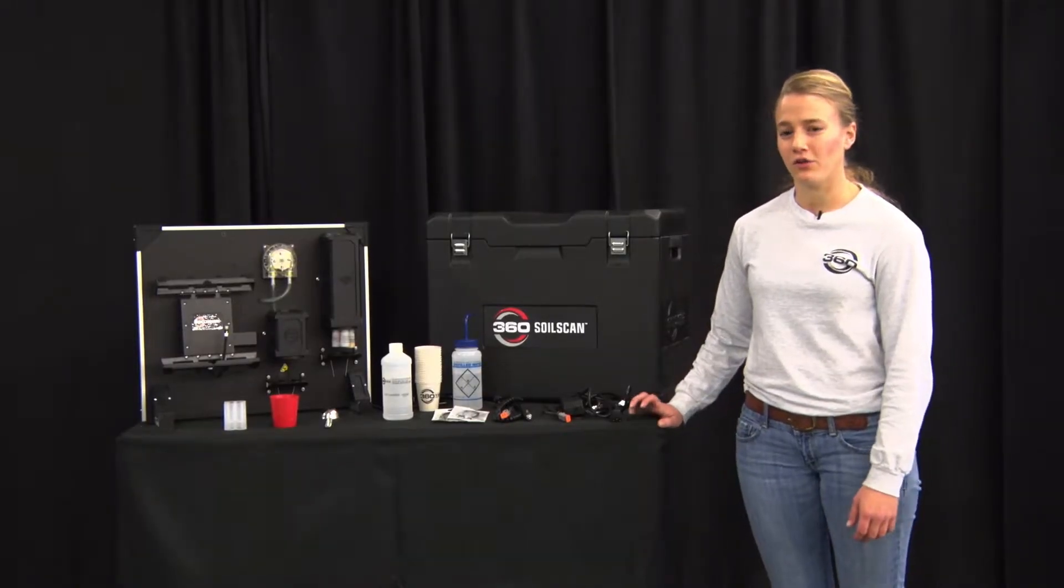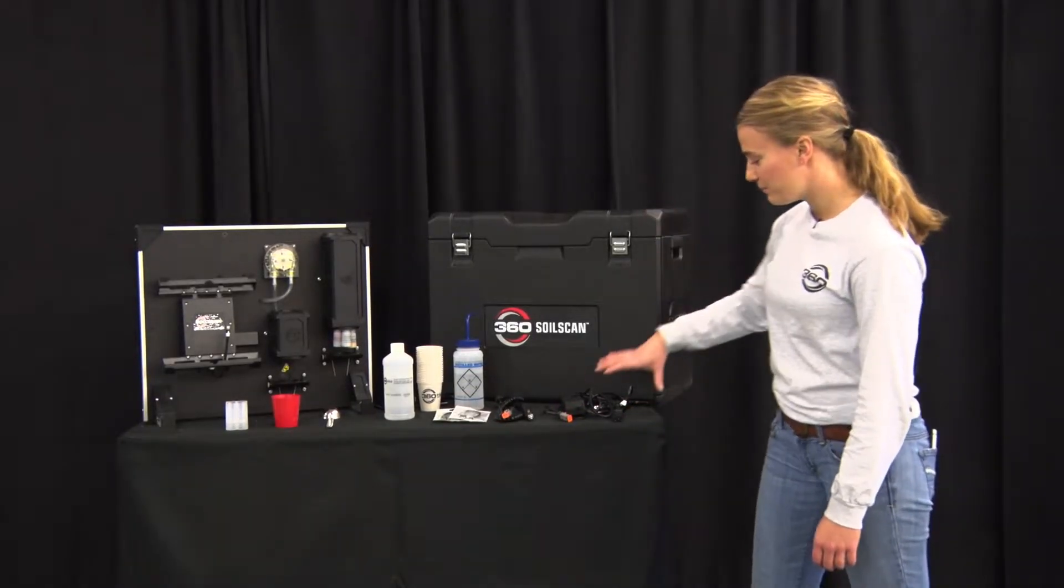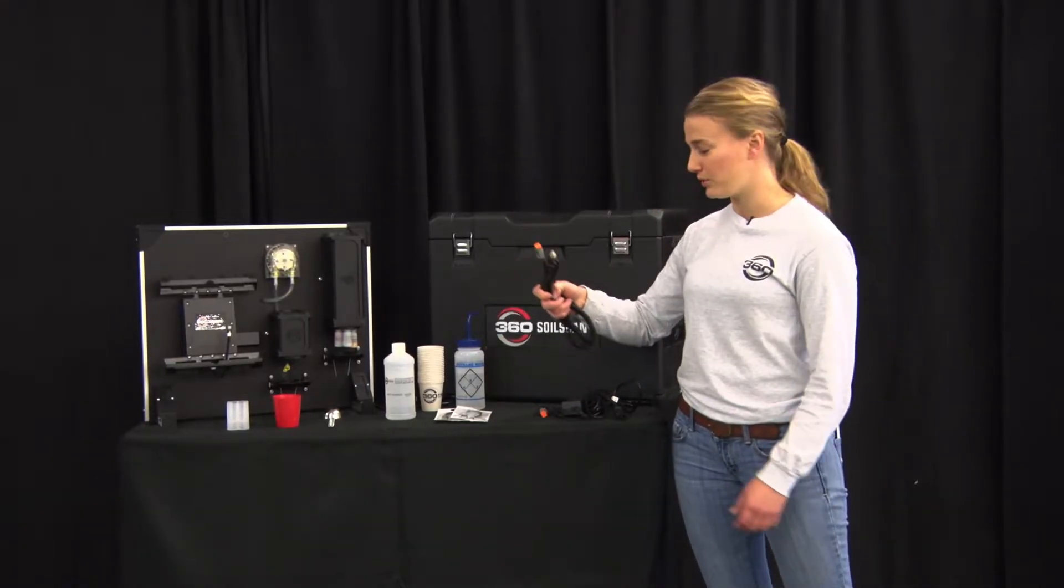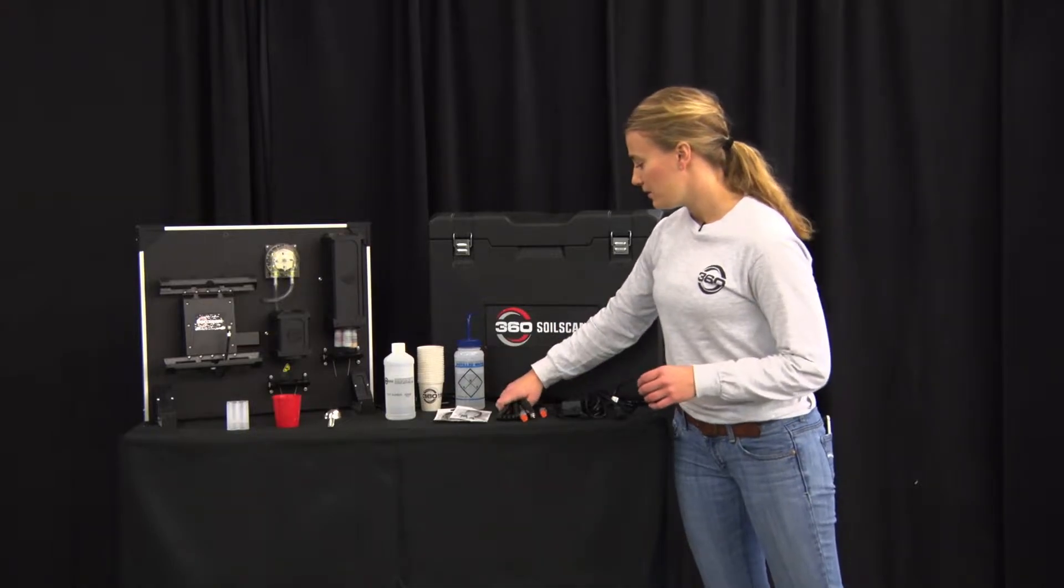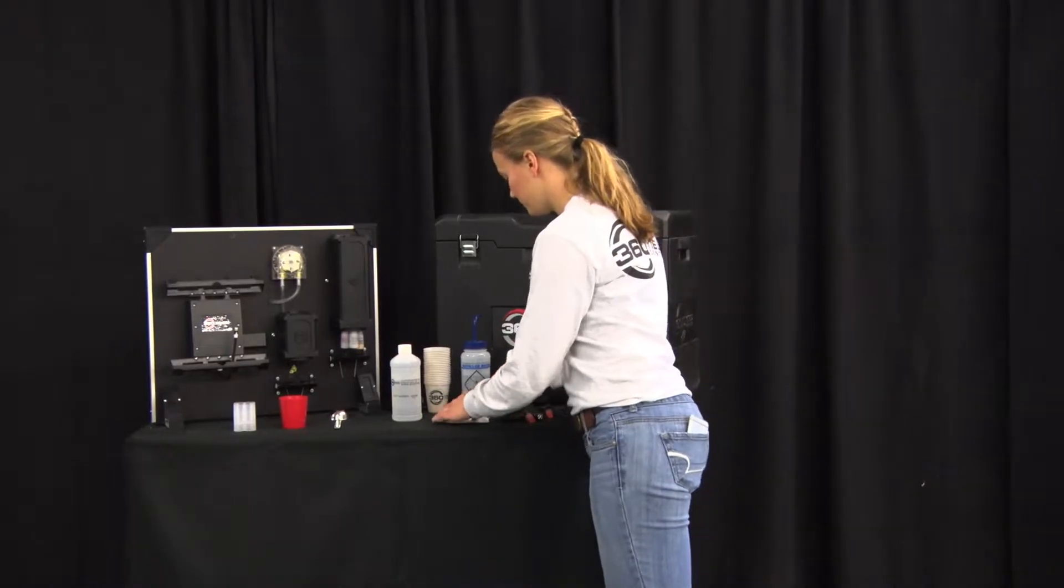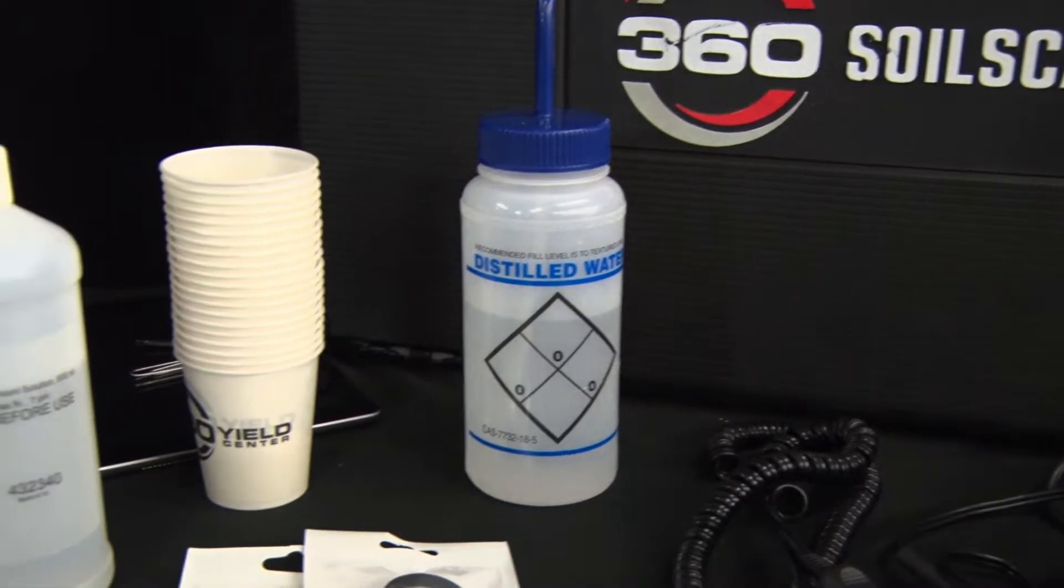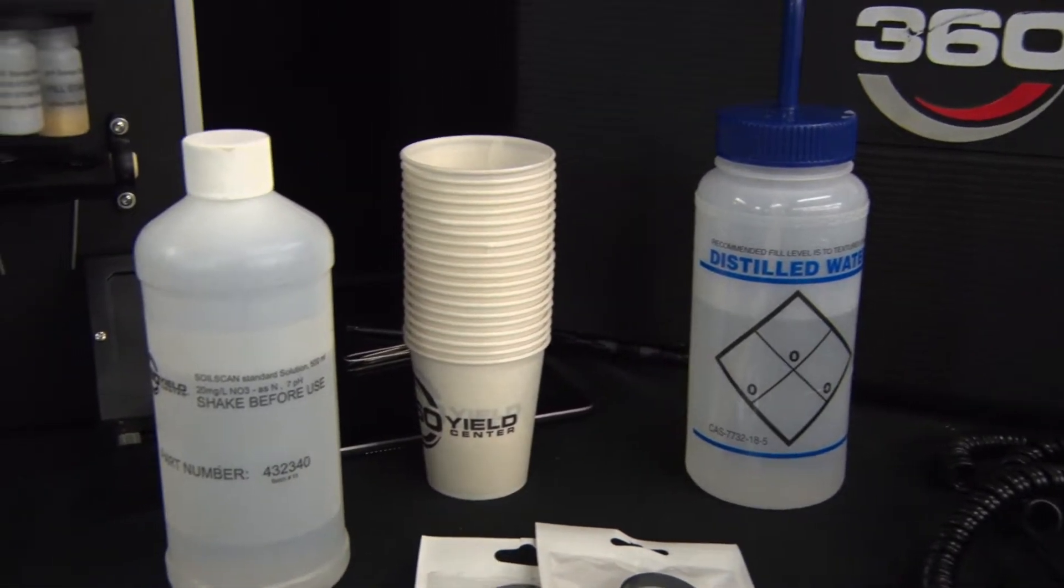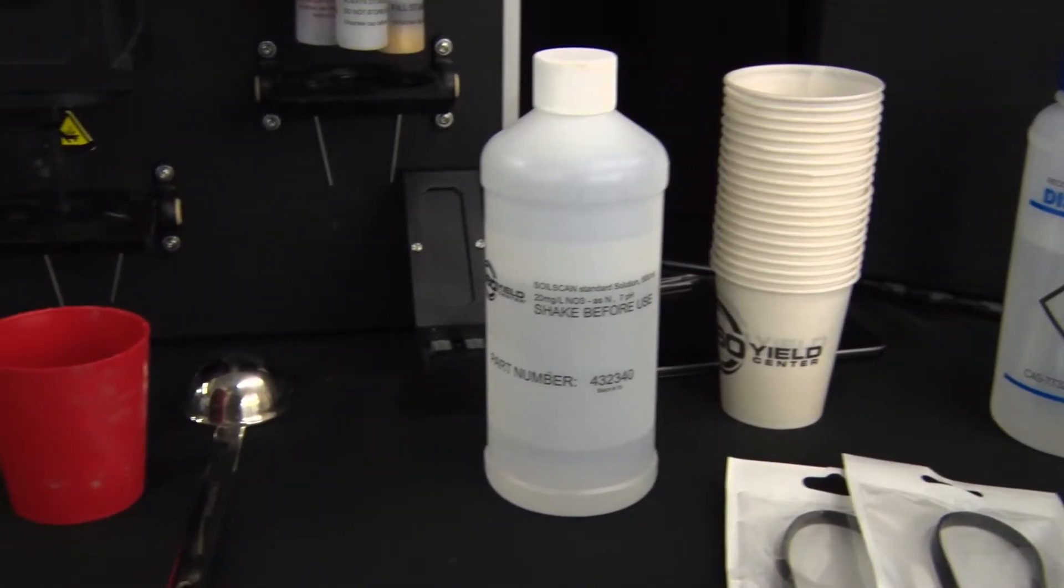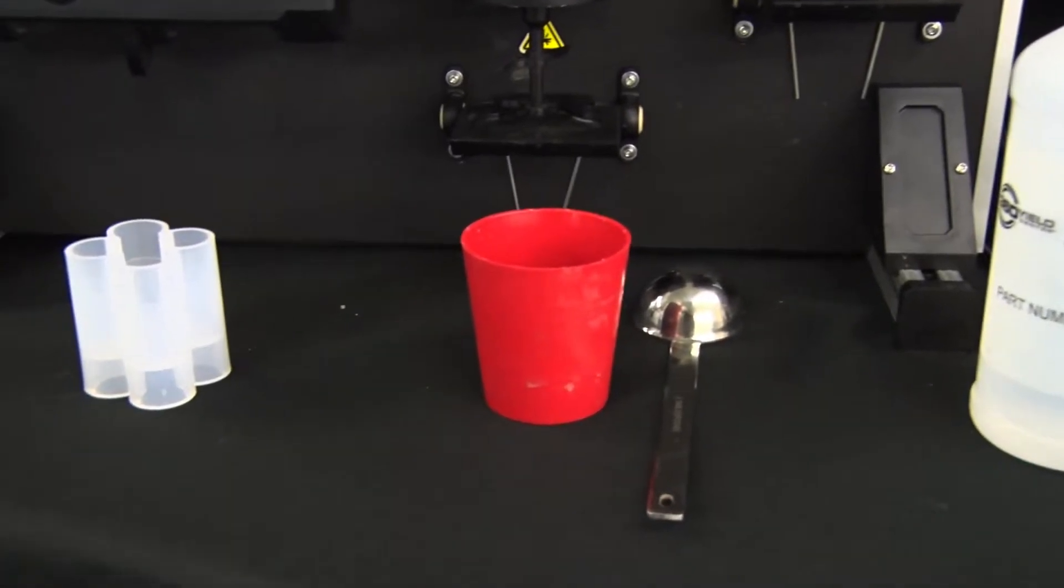On the table here are all of the basic components that will come with your SoilScan. The case, power cables, both 110 volts and 12 volts to be plugged into a cigarette lighter, charging cables for your iPad, a cleaning container, there will be 50 Dixie cups, a bottle of standard solution, a scoop, a mixing sleeve, and the calibration bottle.